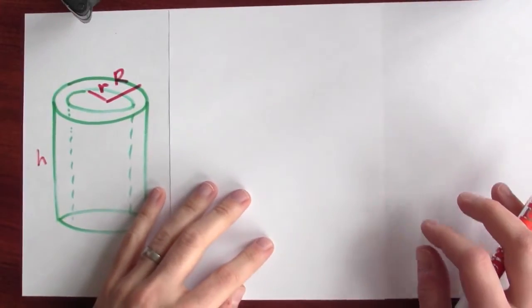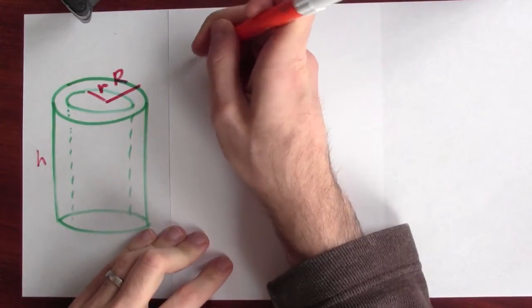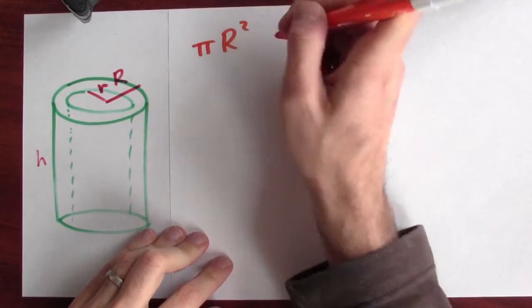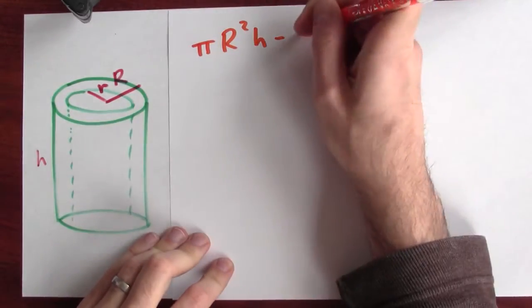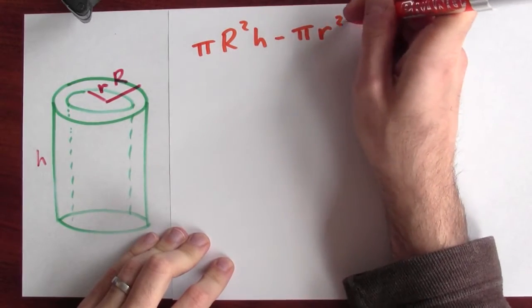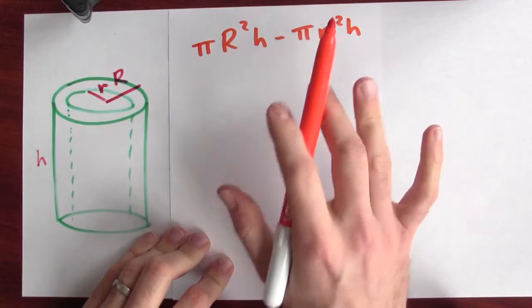Let's write down the formula for the volume of the shell in between. So the volume of the shell is the volume of the big cylinder π big R² h minus the volume of the little cylinder that I drilled out, π little r² h. In fact, you'll recognize that this makes it look a lot like a washer.